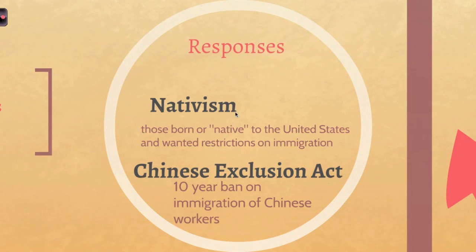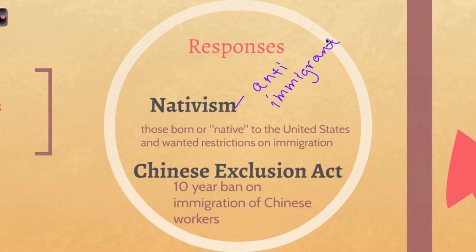Different responses happened during this time. Nativism refers to the anti-immigrant group — those supposedly born in the United States who were anti-immigrant and wanted restrictions on immigration. One of the big examples is the Chinese Exclusion Act, a 10-year ban on immigration of Chinese workers. This happened because people feared losing their jobs to immigrants from China, so an act was implemented to reduce immigration.